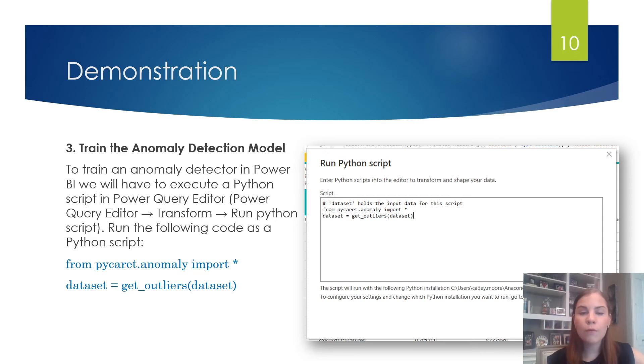So for this demonstration, I'm just going to use a simple script that's pictured on the screen. So from pycaret.anomaly import * dataset = get_outliers(dataset). It's as simple as that to go ahead and transform your data and identify anomaly.